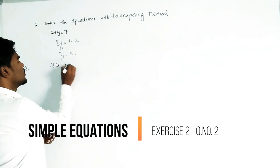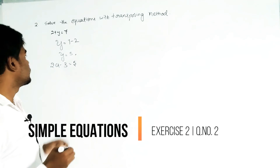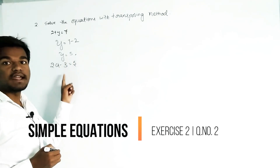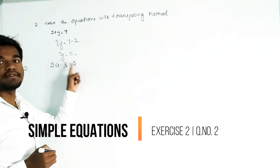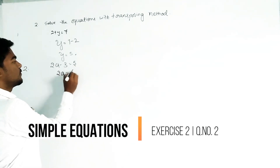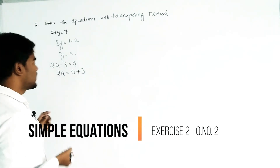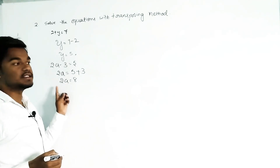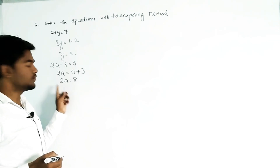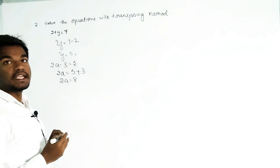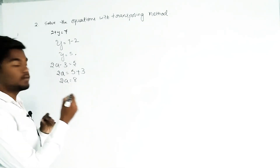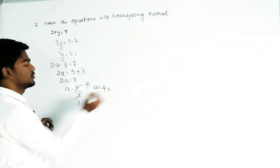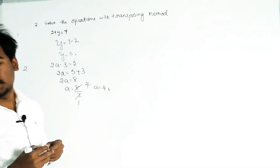Our second question is 2a minus 3 equals 5. We need to shift minus 3 to the right side; after transposing, minus 3 becomes plus 3. So 2a equals 5 plus 3, which gives 2a equals 8. The 2 is under multiplication, so transposing it to the right makes it division: a equals 8 divided by 2, so a equals 4.